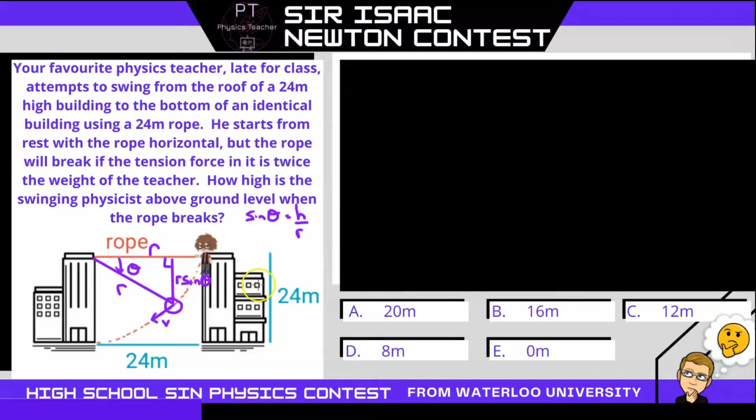Alright so let's start the problem by looking at energy conservation. So right here at the top we have gravitational potential energy. At some time later some gravitational potential energy has converted into kinetic energy. So we can say that a change in gravitational potential energy is going to be equal to some kinetic energy that we receive at this point.